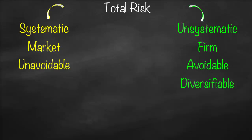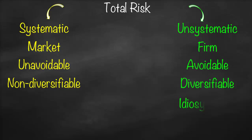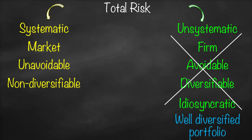Every time you invest, you need to invest in different sectors, and within each sector you need to invest in different companies. That's why unsystematic risk is also called diversifiable risk, while systematic risk is called non-diversifiable risk. Another synonym for unsystematic risk is idiosyncratic risk.